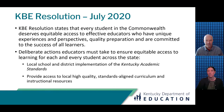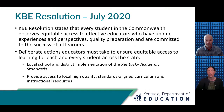Based on this resolution, we need to consider what are the deliberate actions that we as educators need to take to ensure equitable access to learning for each and every student across the state. It starts with local school and district implementation of the Kentucky academic standards and providing teachers and students with access to local high quality standards aligned curriculum and instructional resources designed to help students meet the grade level expectations within the CAS.